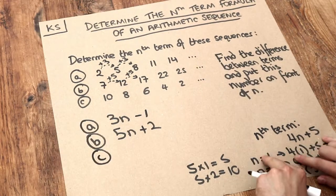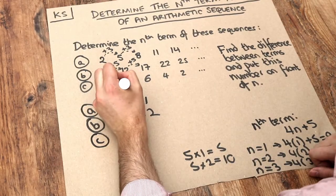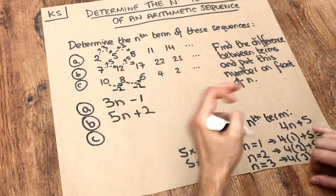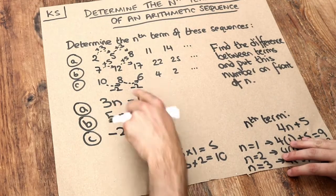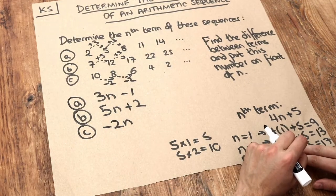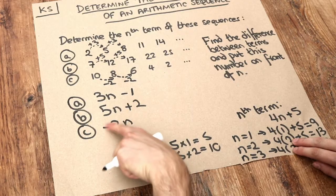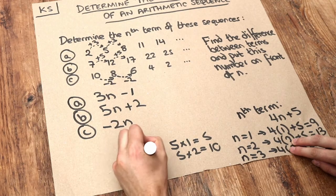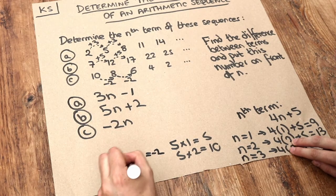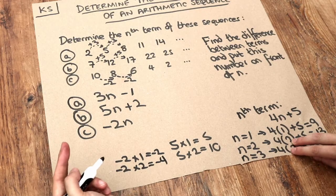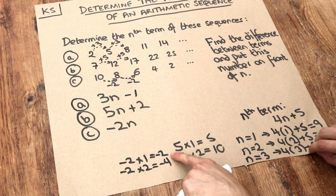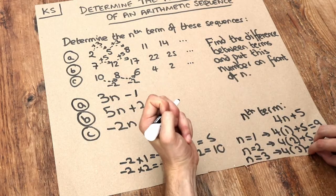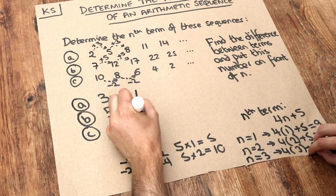The last one is a bit more complicated. The sequence is decreasing by 2 each time, so the difference is minus 2. Same method though — we put minus 2 in front of n to get −2n. This gives the minus 2 times table: minus 2 times 1 for the first term is minus 2, the second term is minus 4. But we don't want the first term to be minus 2 — we want it to be 10. To get from minus 2 to 10, you add 12, giving us −2n + 12.